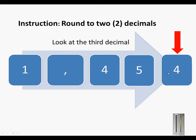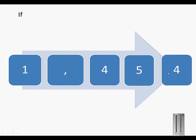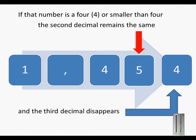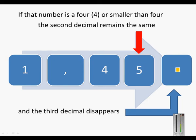If this number is a four or smaller than four, the second decimal remains the same and the third decimal number will disappear. So this number was 1.454 — the five remained a five and the four disappeared.